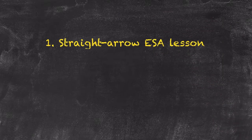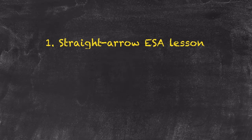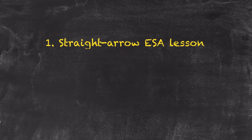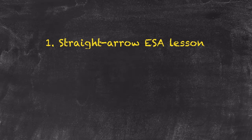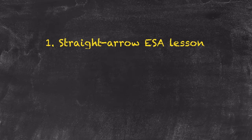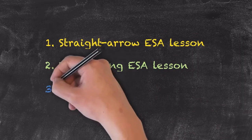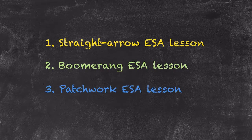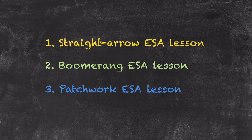This methodology is known as a straight arrow ESA lesson. If every lesson was a straight arrow ESA lesson, it is quite possible that students would be able to predict what is coming next. Whilst this is good for lower level students, it could potentially become a little bit boring for higher level students. So Harmer generated two other types of ESA lesson to create more interest: the boomerang lesson and the patchwork lesson. We're going to look at those other types in a little bit more detail, going through each type to see how they are created.